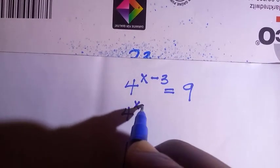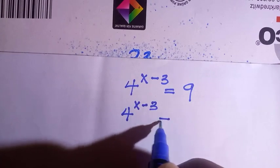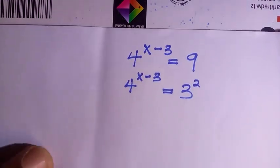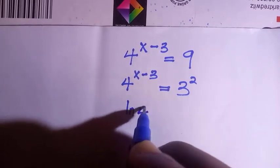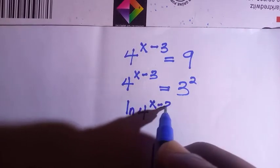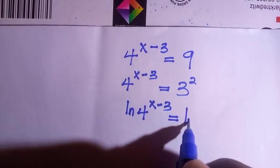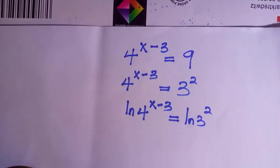So here we have 4 to the power of x minus 3, and this equals to 3 to the power of 2. And by introducing ln to both sides, we have ln of 4 to the power of x minus 3 equals to ln 3 to the power of 2.